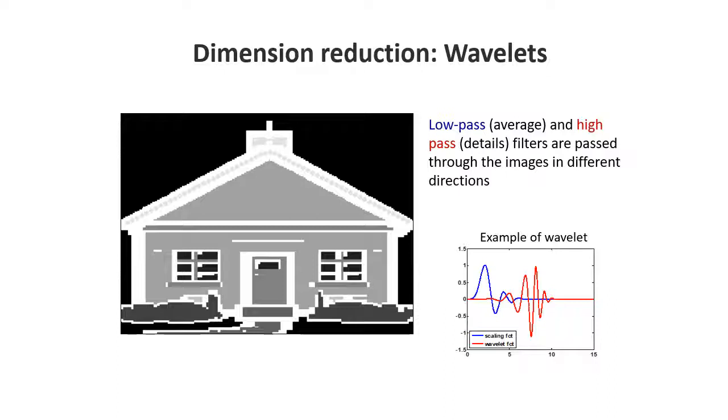One way of doing dimension reduction, as we've seen before, is PCA. Since we're dealing here with waveforms, we're going to use a different method, which is called wavelet analysis.